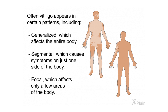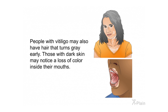Vitiligo often appears in certain patterns, including generalized, which affects the entire body; segmental, which causes symptoms on just one side of the body; and focal, which affects only a few areas. People with vitiligo may also have hair that turns gray early. Those with dark skin may notice a loss of color inside their mouths.